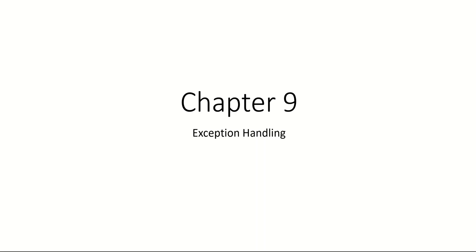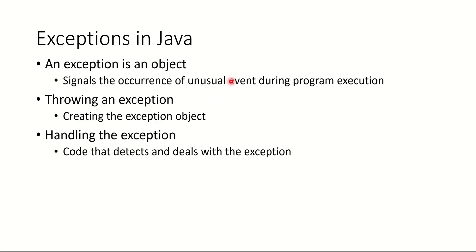Bismillah ar-Rahman ar-Rahim. In chapter 9 we will talk about exception handling. In section 9.1 we need to know what is an exception, what is the meaning of it, and how can we find the output of these small examples. Exception in Java is where we signal the occurrence of an unusual event during program execution, and then we need to throw an exception — create the exception object — and then we need to handle the exception with coding that will detect the error and deal with it.